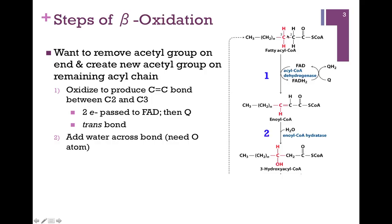We're going to oxidize the bond between carbons two and carbon number three. Those electrons are passed to an FAD cofactor on the enzyme that catalyzes the reaction, acyl-CoA dehydrogenase, which then passes those electrons to coenzyme Q. So here's another example of an enzyme that contributes to the Q pool. Now we have our carbon-carbon double bond and our enoyl-CoA product.